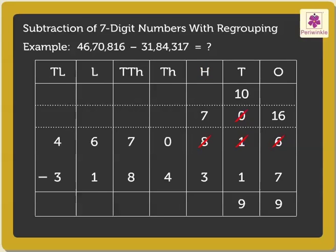Now subtract the hundreds: 7 minus 3, which is equal to 4. Now subtract the thousands: 0 minus 4. As 0 is smaller than 4, we regroup 7 ten-thousands and 0 thousands as 6 ten-thousands and 10 thousands. Therefore, 10 minus 4 is equal to 6 thousands.